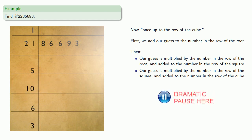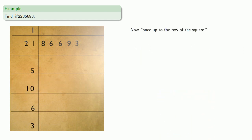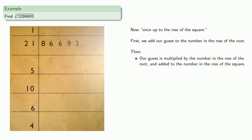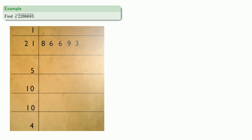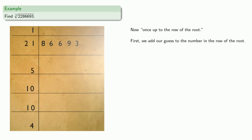And now we go once up to the row of the square. So again, guess is added to the number in the row of the root. Then guess times the number in the row of the root is added to the number in the row of the square. And one last time, once up to the row of the root — where we don't actually go very far — we add our guess to the number in the row of the root.